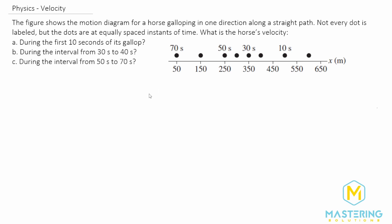Welcome to Mastering Solutions. In this velocity problem, we're talking about how to calculate the horse's velocity at different time intervals. In part A, they ask what is the velocity for the horse during the first 10 seconds of its gallop. Right here is where it's starting. Before we get into that,